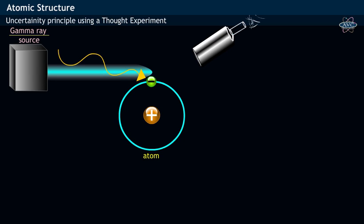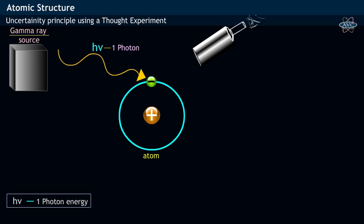After coming in contact with the electron, the light having at least one photon energy gets diffracted and later enters into the microscope.